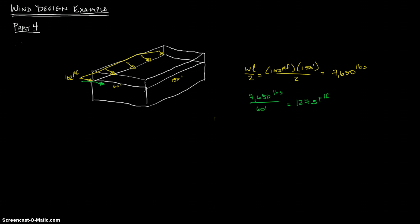You need to somehow resist that 7650 pounds of shear, and you need to do that by putting anchors in that wall at the top of the wall. So the question is, what should be the maximum spacing of the anchor bolts to transfer the diaphragm shear into the walls?